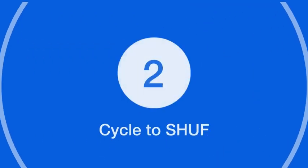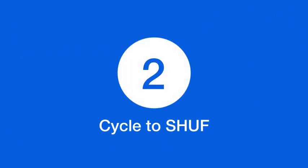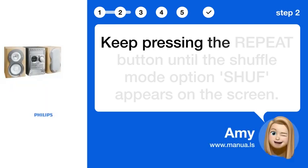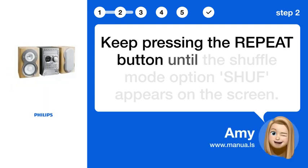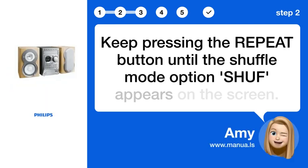Step 2. Cycle to SHUF. Keep pressing the REPEAT button until the shuffle mode option SHUF appears on the screen.